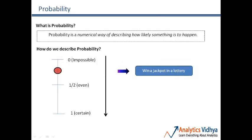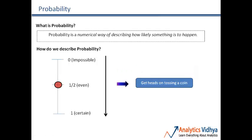Moving further, an event which has a probability between zero and half would be winning a jackpot in a lottery. When you take a single lottery ticket and there are millions of tickets in the market, if all tickets have a similar chance of winning, you have less than a fair — less than half — chance of winning. So neither is the event impossible, and hence the probability lies between zero and half.